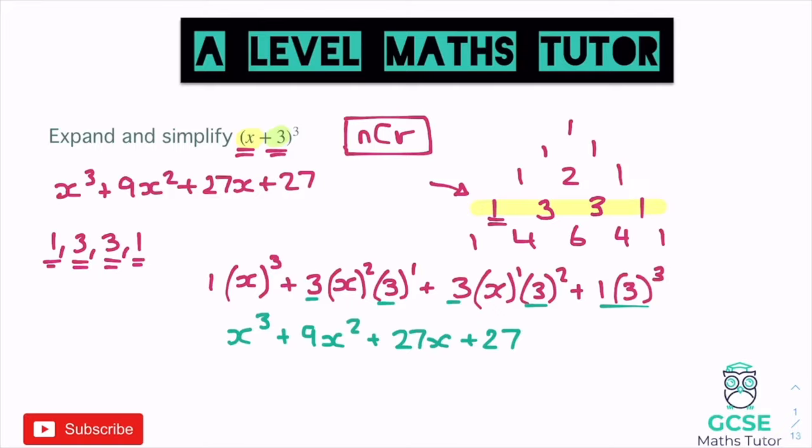That's all we're going to do for binomial expansion — it gets a little bit more complicated as we go further down Pascal's triangle and get larger numbers involved, but basically that's it. We write down what the numbers are in that line of Pascal's triangle, and then balance out the powers moving through. Let's have a look at another one and see how we can apply this to a slightly harder question.